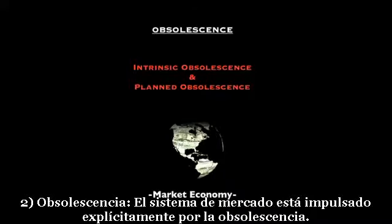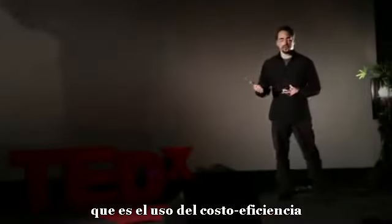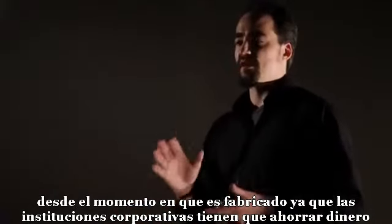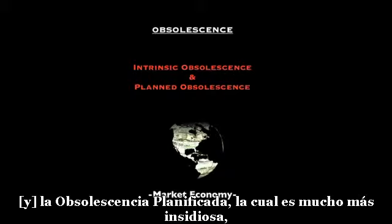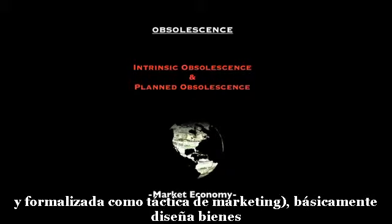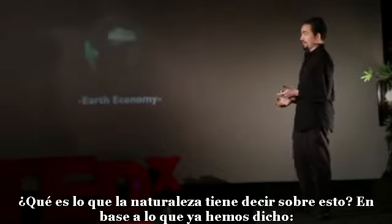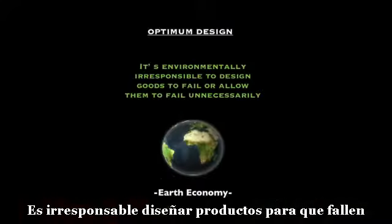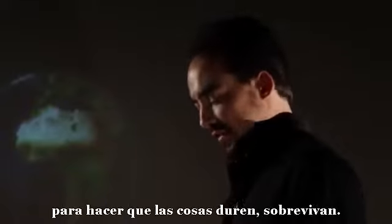Point two: obsolescence. The market system is driven explicitly by two forms of obsolescence. Intrinsic obsolescence is the use of cost efficiency, meaning every good produced has to be inferior the moment it's made because corporate institutions must save money at the very beginning of production to remain competitive. Planned obsolescence, which is much more insidious and basically a form of fraud — even though it's codified as a marketing tactic — designs goods to break down under the assumption of repeat purchases. What does nature have to say? It's environmentally irresponsible to design goods to fail or allow them to fail unnecessarily. We need optimum design to have things last.